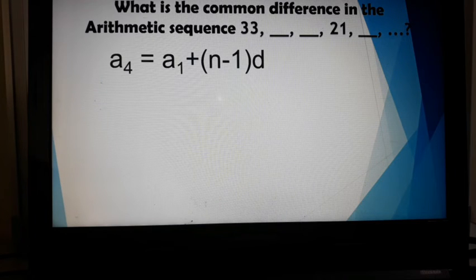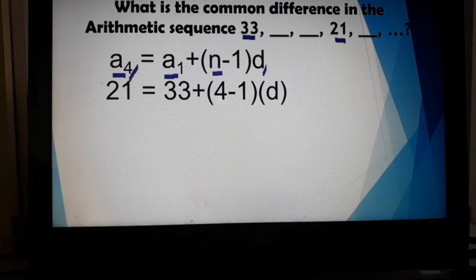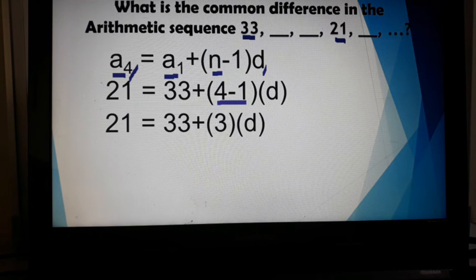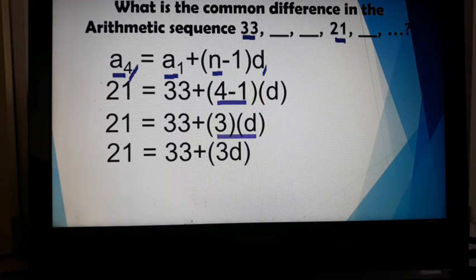Let's solve. We will just replace our 4th term with 21. And then the a sub 1, we will replace with 33. And our n, we will replace with 4 because that's the term position. And the d, we won't put anything there because we don't know the value of d yet. Substitute. Then you solve first the ones inside the parentheses, which is 4 minus 1. So 21 is equal to 33 plus 3 times d. That will give us 21 is equal to 33 plus 3d.